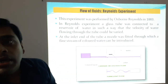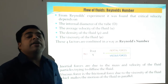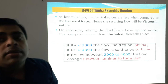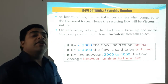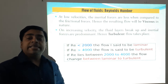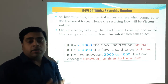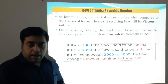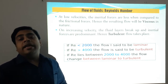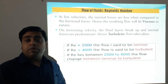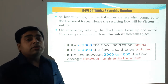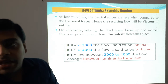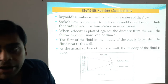Then we moved on to the Reynolds experiment and subsequently quantified it, including the Reynolds number. If the Reynolds number is less than 2000, the flow is laminar. If it exceeds 4000, the flow is turbulent. If the value lies between 2000 and 4000, the flow transitions between laminar and turbulent. This is a very important principle given by Reynolds.